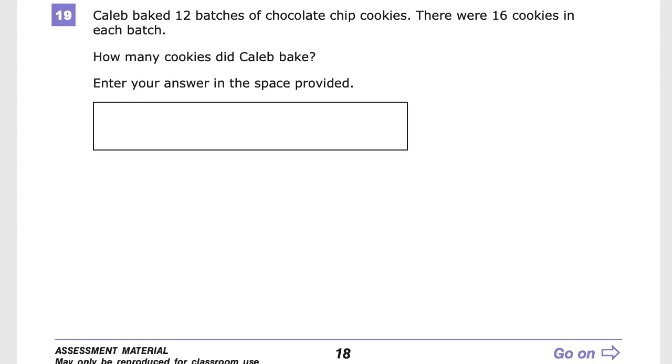This is the Grade 4 Math Practice Test for TN Ready. On this version of the test, it's question 19. Caleb baked 12 batches of chocolate chip cookies, and there were 16 cookies in each batch. How many cookies did Caleb bake?